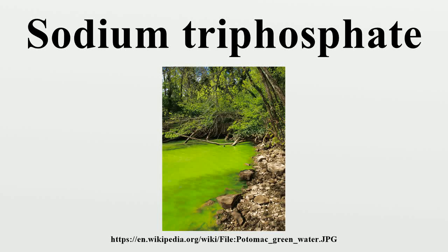Sodium triphosphonate, also sodium tripolyphosphate, or tripolyphosphate, is an inorganic compound with formula Na5P3O10. It is the sodium salt of the polyphosphate pentaanion, which is the conjugate base of triphosphoric acid. It is produced on a large scale as a component of many domestic and industrial products, especially detergents. Environmental problems associated with eutrophication are attributed to its widespread use.